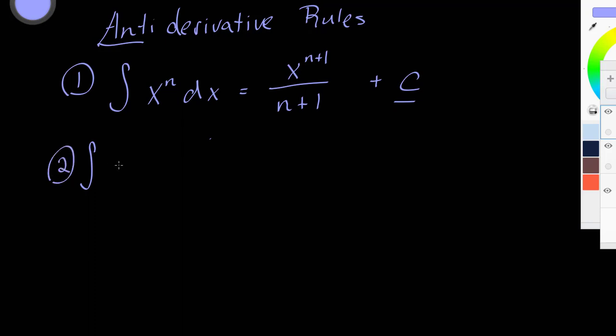The second derivative rule is that if you're multiplying some sort of function by a constant and taking its anti-derivative, what you can do is you can take that constant and move it out in front, just like we did with derivatives. So constants, you can just move them out in front and don't worry about them.